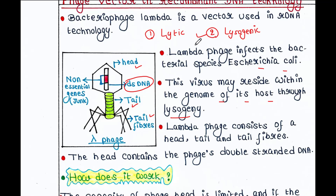In the lysogenic cycle, a phage DNA acts very cleverly. It gets integrated into the bacterial genome and doesn't do any harm immediately. When the bacterial DNA is replicated and distributed among the two daughter cells, the integrated viral DNA also gets passed down into the daughter cells.